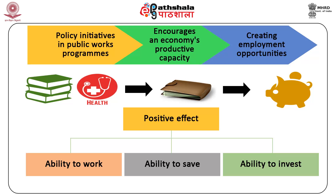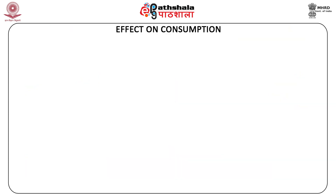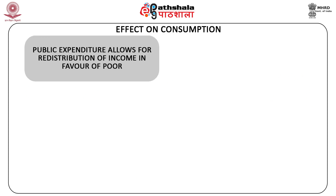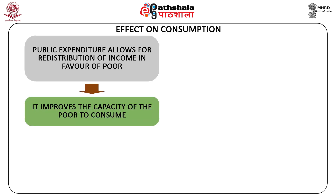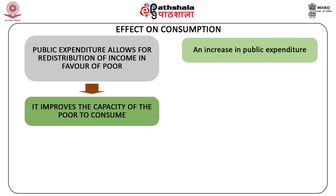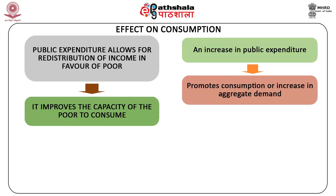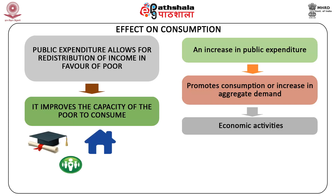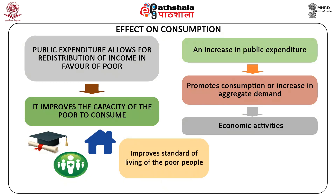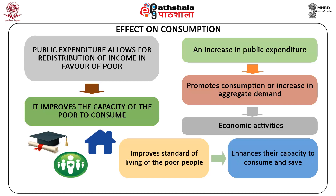With increasing domestic savings resulting in investment and capital formation, the rate of economic growth and development also rises. Effect on Consumption: as public expenditure allows for redistribution of income in favour of the poor, it improves the capacity of the poor to consume. An increase in public expenditure promotes consumption or increase in aggregate demand and thereby other economic activities. The government expenditure on welfare programs like free education, housing and health care improves the standard of living of the poor people and enhances their capacity to consume and save.